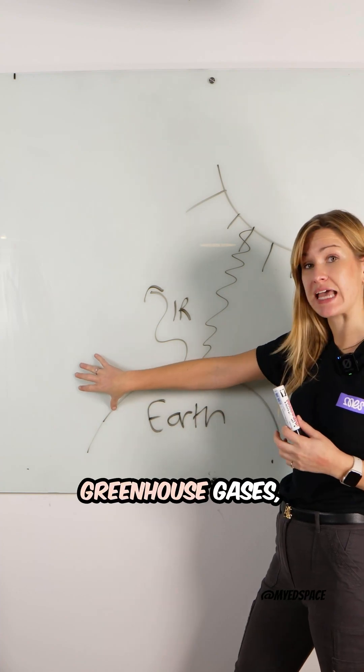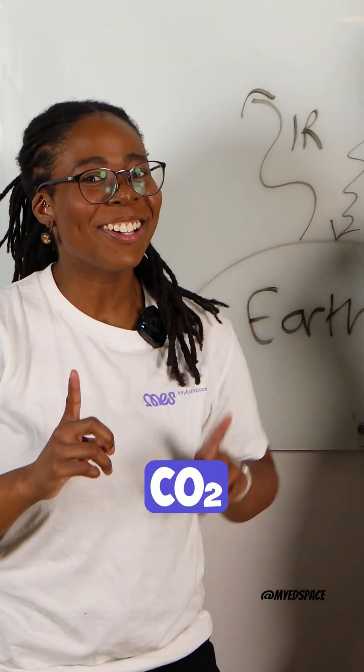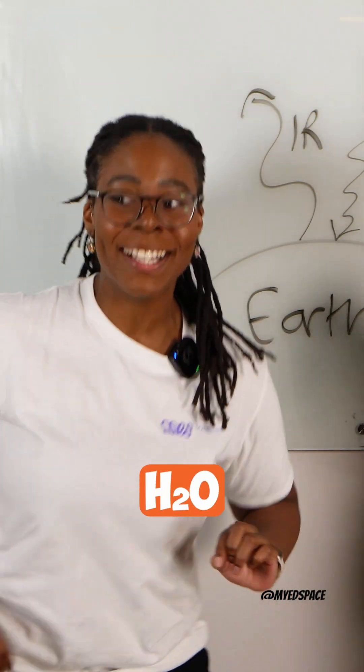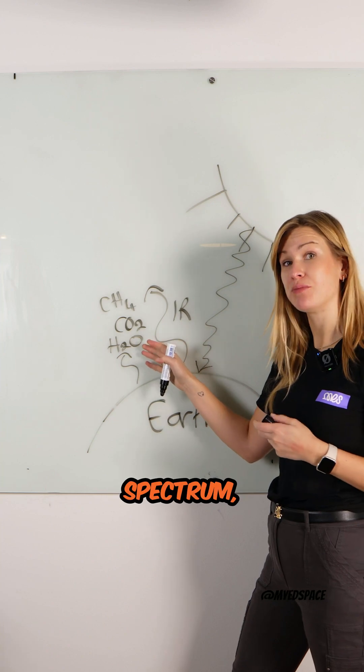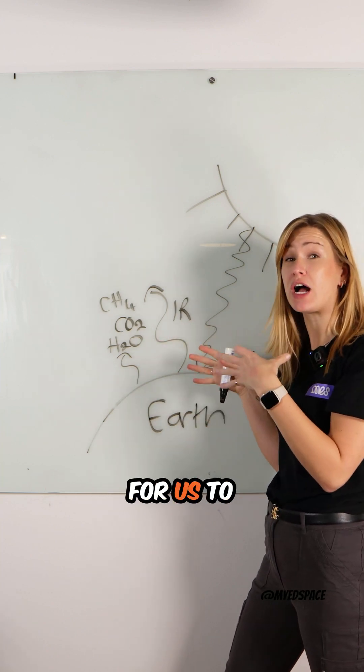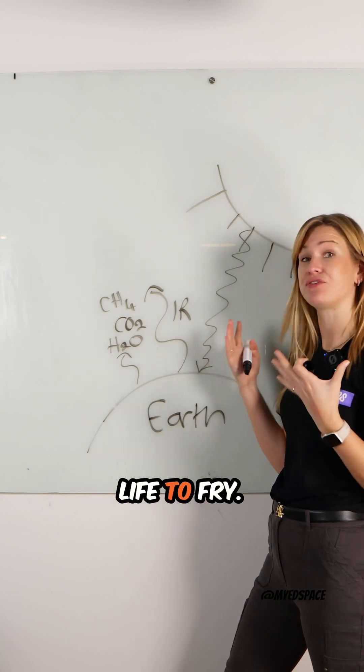If we didn't have any greenhouse gases, we'd actually all freeze to death. These greenhouse gases, for example carbon dioxide, methane, and water vapor, absorb the longer infrared region of the spectrum, which keeps the temperature of the Earth at a good level for us to have liquid water and life to thrive.